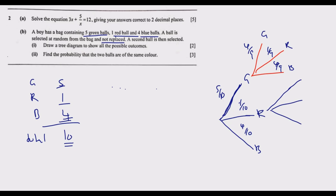If a red ball was picked first, all the red balls are gone since there was only one, so the probability of red second is 0 out of 9. Green balls are untouched so there are still 5 out of 9, and blue balls are untouched at 4 out of 9. Again, 5/9 plus 0/9 plus 4/9 equals 1.